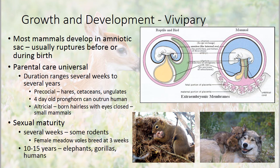On the other hand, altricial mammals are born hairless with eyes closed. Most small mammals are born altricial and stay in the nest close to mom for a longer period while they develop. Sexual maturity also spans a wide range: it could be just several weeks for some rodents — female meadow voles breed as early as three weeks — whereas for larger mammals like elephants, gorillas, and humans, it's ten to fifteen years before sexual maturity.